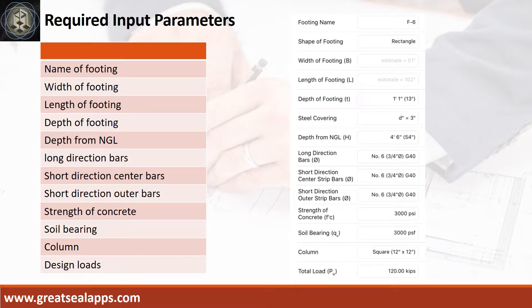Enumerate input parameters required: Footing name F6, shape of footing — rectangle, depth of footing 13 inches, depth from natural grade line 4 feet 6 inches, long direction bars 3/4-inch diameter at grade 40, short direction bars 3/4-inch diameter at grade 40, strength of concrete 3,000 psi, soil bearing capacity 3,000 PSF, column 12 inches by 12 inches square, and total load 120 kips.